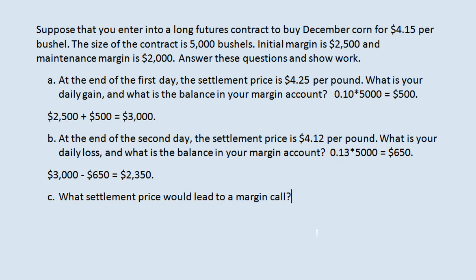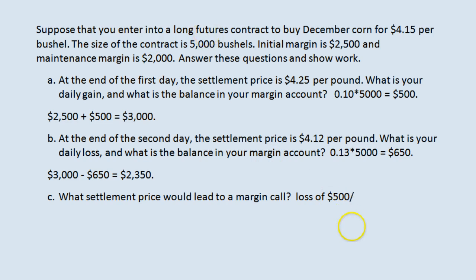What settlement price would lead to a margin call? A margin call occurs when the value of your account drops to or below $2,000. This is to protect your broker from you having a loss and not having any money to pay for it. You reach the maintenance margin and get a margin call when you lose $500 total, dropping you from $2,500 to $2,000. $500 across 5,000 bushels is $0.10 a bushel, so there will be a margin call if the price drops to $4.05.